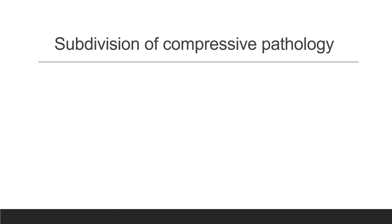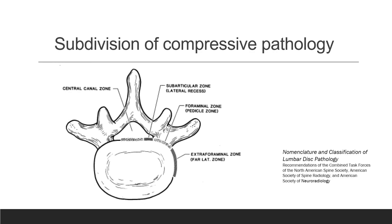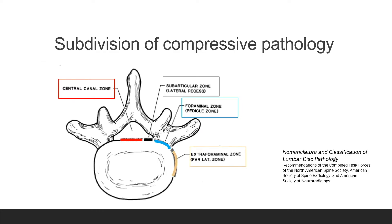In the lumbar spine, disc pathology can be subdivided into four regions: central zone, subarticular zone, foraminal zone, and extraforaminal zone. Also, lumbar spinal stenosis can be subdivided into central, subarticular, and foraminal types of stenosis.